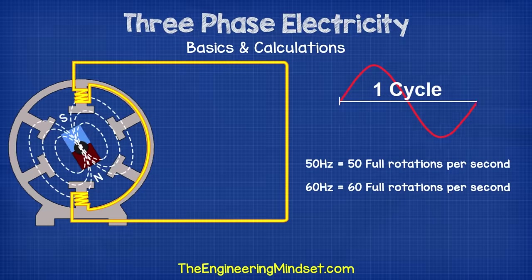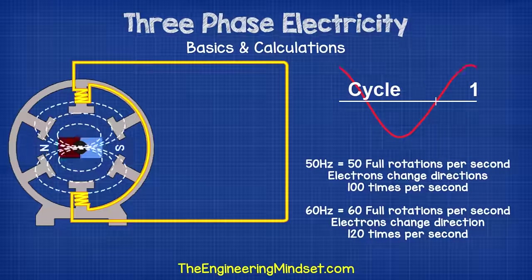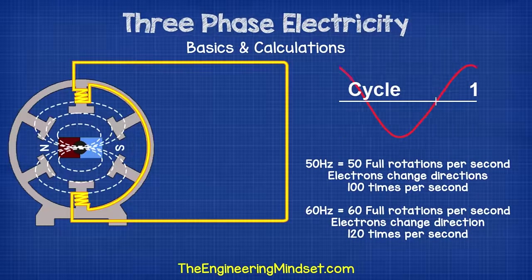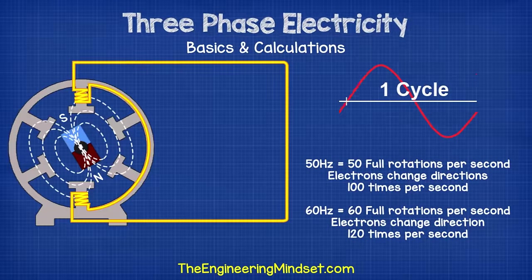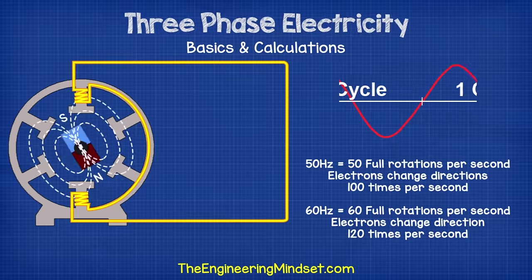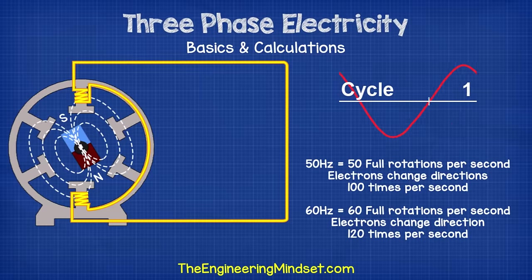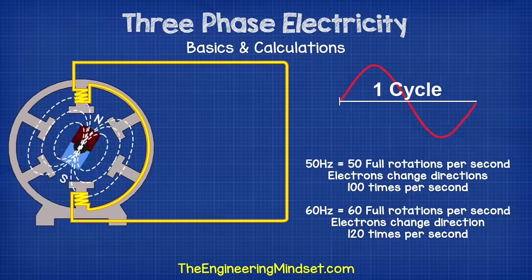50 hertz means the magnet completes 50 rotations per second; 60 hertz means 60 rotations per second. If the magnet makes a full rotation 50 times per second — 50 hertz — then the coil in the generator experiences a change in polarity of the magnetic field 100 times per second. So the voltage changes between a positive value and a negative value 100 times a second. At 60 hertz, the voltage will change 120 times per second.